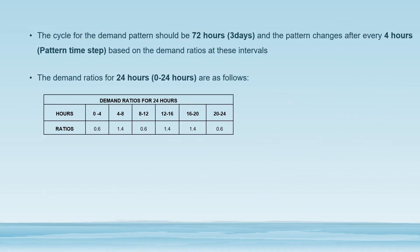As shown on the EPANET software, the cycle demand pattern should be 72 hours — three days — and the pattern changes every four hours. As you can see here, we have our demand ratios for 24 hours, as shown on the table below.